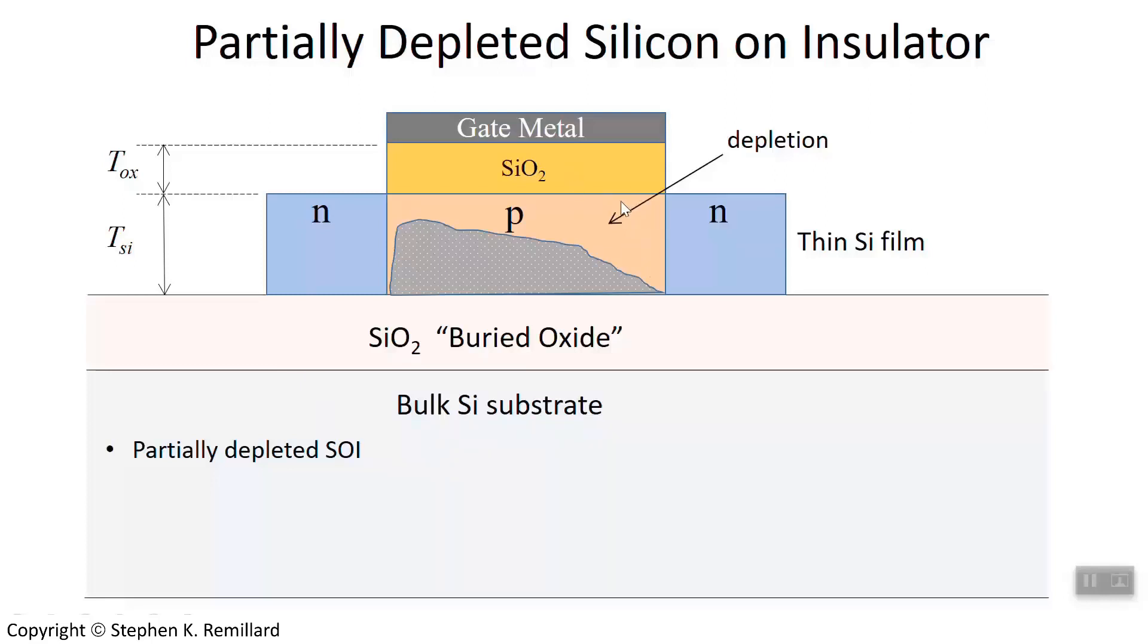This gate region is always in some state of depletion because it is so thin that depletion is a significant portion of its thickness, and so it is referred to as partially depleted silicon on insulator.